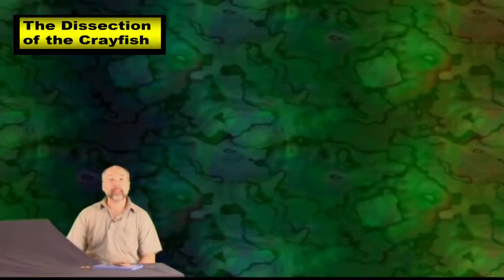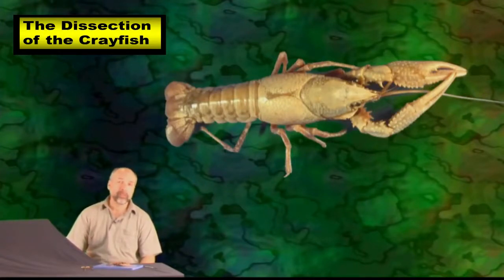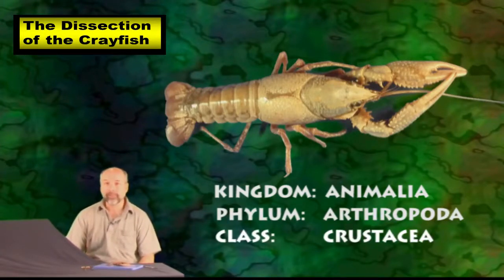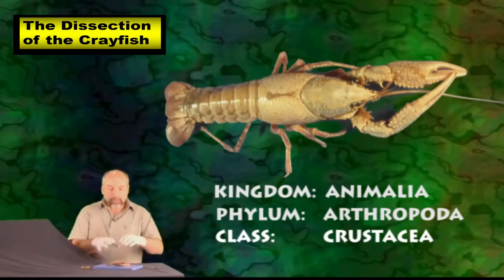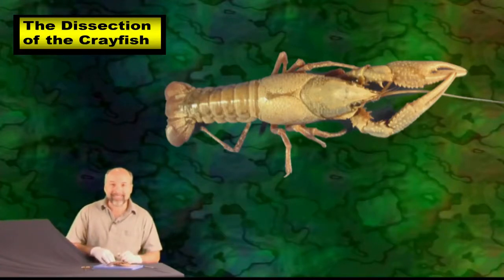Today is going to be dissection day. We're looking at the crayfish. The crayfish is a really cool creature found in water. It's part of the kingdom Animalia, phylum Arthropoda, and the class Crustacean. We're going to be taking this thing apart bit by bit, piece by piece, and better understanding just all the cool parts of its anatomy.